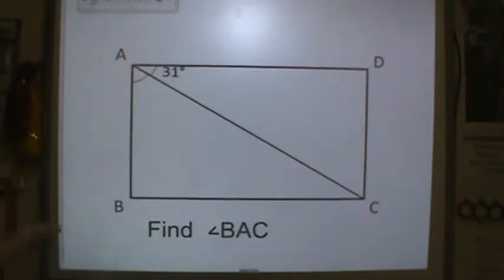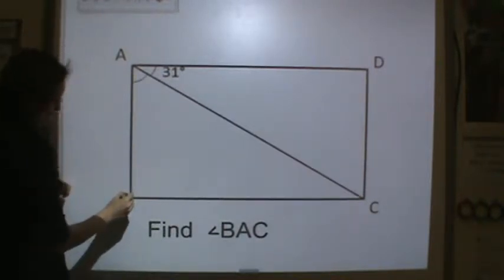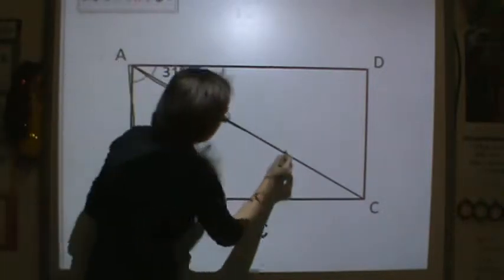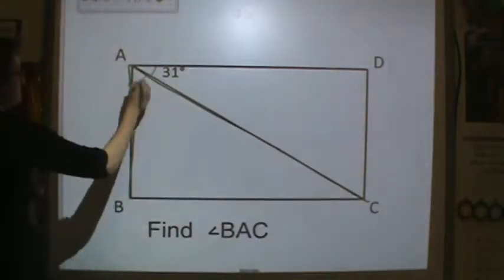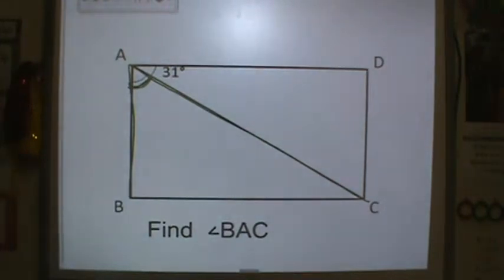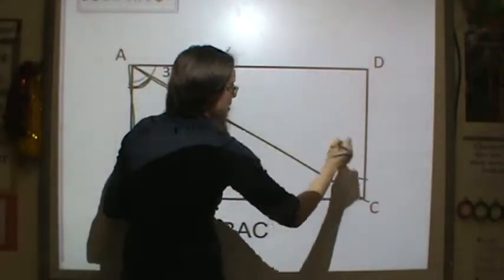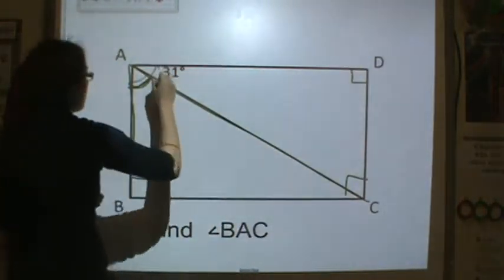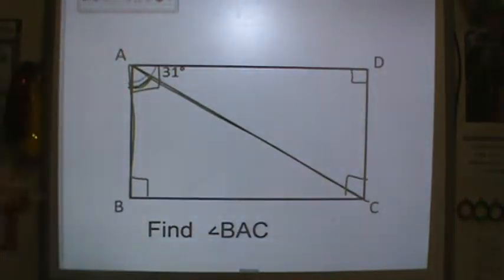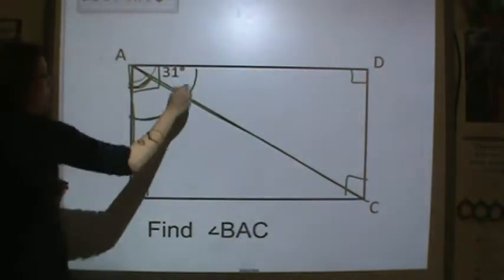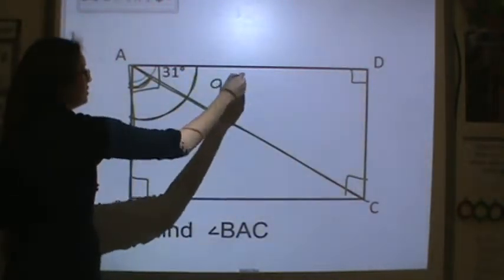Now let's look at this one. We have angle BAC. So here's B, I'll start there, up to A and then over to C. So this is my missing angle right here. Now this is a rectangle. So I know all of my vertices are right angles. A right angle is 90 degrees. So this total angle is 90 degrees.